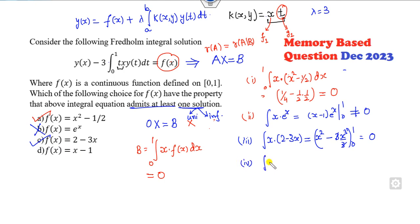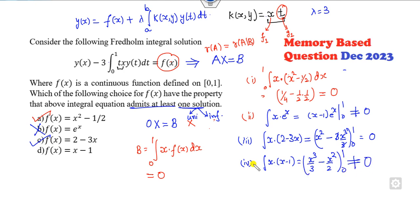Look at the fourth option: x into (x minus 1). So it's x cubed over 3 minus x squared over 2 from 0 to 1, which is clearly non-zero. So the correct answers are option A and option C. Once you convert the problem into a system of equations, you will get the answer very easily.